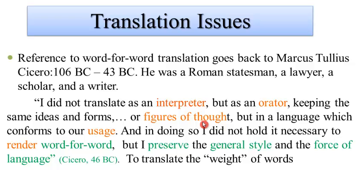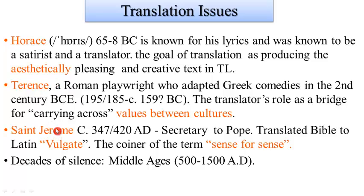Many people were interested in the act of translating. Cicero, who was a Roman statesman, referred to the translator as an interpreter and called for translating figures of thought and preserving the general style and force of language rather than rendering word for word. Horace focused on the aesthetics of the source text, while Terence opted for carrying across values between cultures.